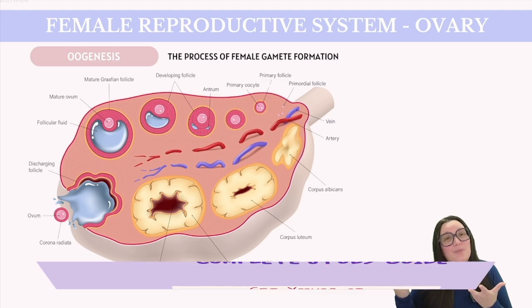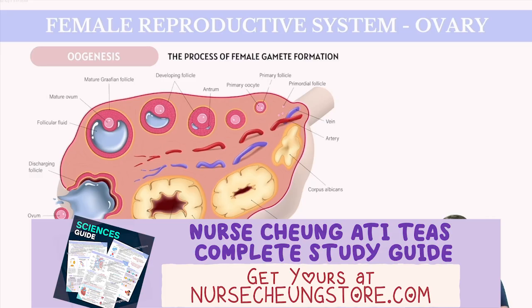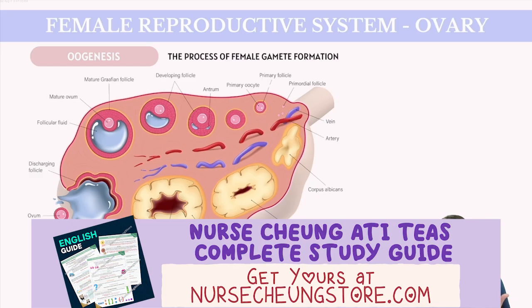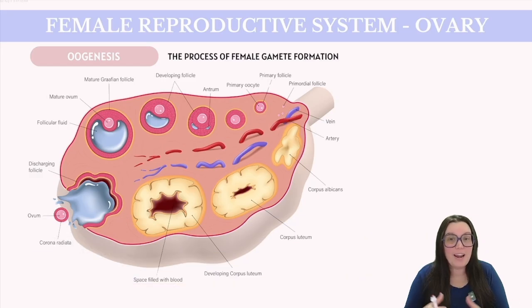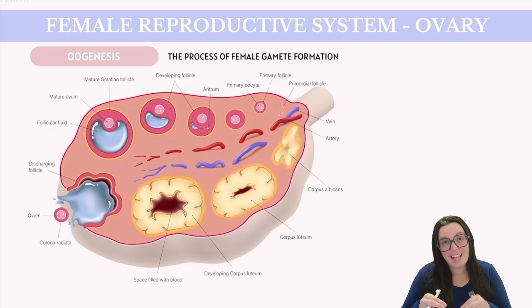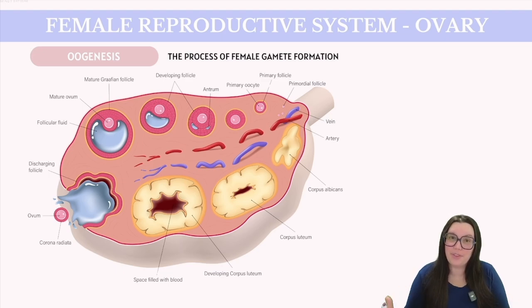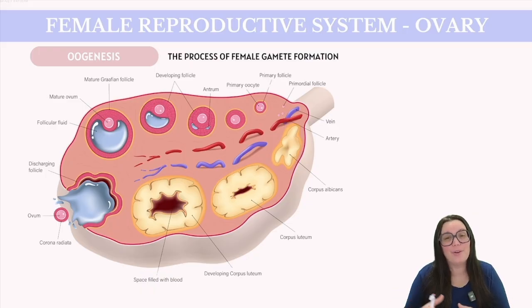Next, let's explore the female reproductive system, which involves a more complex arrangement. Starting with the female gonads known as the ovaries, they are responsible for producing the female gamete or egg cells known as ova, along with sex hormones estrogen and progesterone. Ovaries function similarly to the testes, but they're located inside the body. Each ovary is encased in a fibrous layer known as the tunica albuginea, just like we saw with the testes, and is also covered with a layer of germinal epithelium. They are anchored in place by various ligaments and receive blood supply from the ovarian arteries.